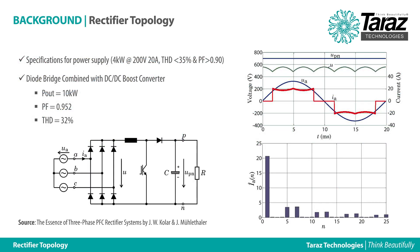The active rectifier under test is part of a programmable DC power supply. The topology used is a diode bridge combined with a single boost converter. A low number of components make this topology cost-effective with a decent power factor of 0.952. However, the input current is non-sinusoidal, which results in a high total harmonic distortion of around 32%.